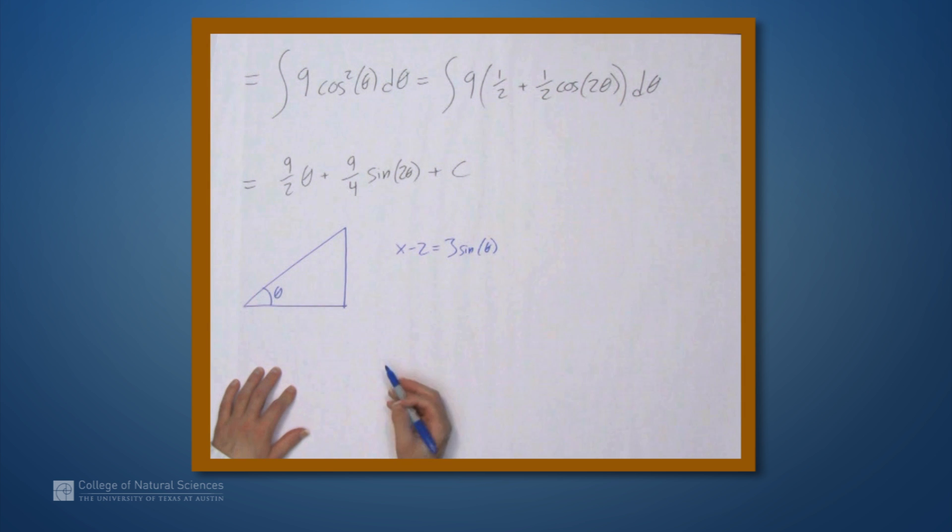And remember that we set x minus 2 equal to 3 sine theta. So this tells us that sine theta is (x - 2)/3. So let's set this side equal to x minus 2, and the hypotenuse equal to 3, which gives us this side equal to the square root of 9 minus (x - 2) quantity squared. And you'll notice it's not a coincidence that when you draw these triangles, this third side that you fill in is usually the expression that you started with.